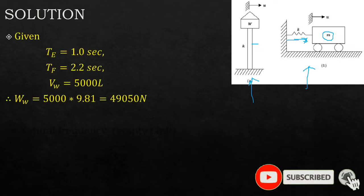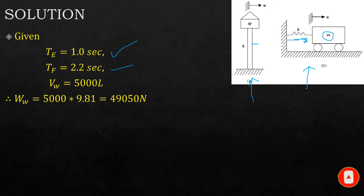Let's see what you are given. You're given the period for the empty tank is one second, when it's full it changes to 2.2, and you're given the volume 5000 liters. So basically the weight is just the volume times g, the gravitational constant, giving you 49,050 Newtons. Then you are required to obtain the lateral stiffness of the tower, k, and also the weight of the tank.